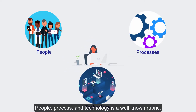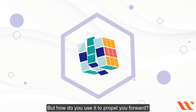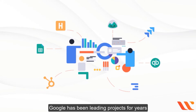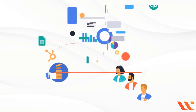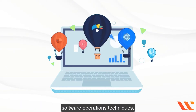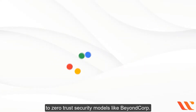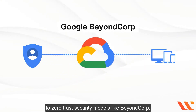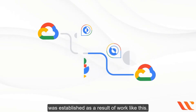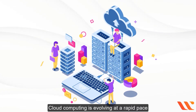People, process, and technology is a well-known rubric, but how do you use it to propel you forward? Google has been leading projects for years to address this challenge — from leadership and people management best practices like Work, to engineering-driven software operations techniques like Site Reliability Engineering, to zero-trust security models like BeyondCorp. A streamlined framework for cloud adoption was established as a result of this work.